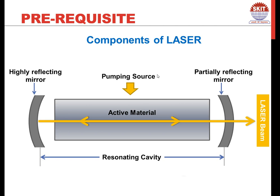The pumping source provides radiation which causes the active material to reach the state of population inversion. Because of that state, stimulated emission occurs, resulting in the generation of photons of the same phase — coherent photons traveling in the same direction. By making these photons pass through the active material again and again using the two mirrors, we can have a large number of stimulated photons. This is why we call this arrangement a resonating cavity — an oscillation of photons going back and forth in the active material produces more stimulated emissions.